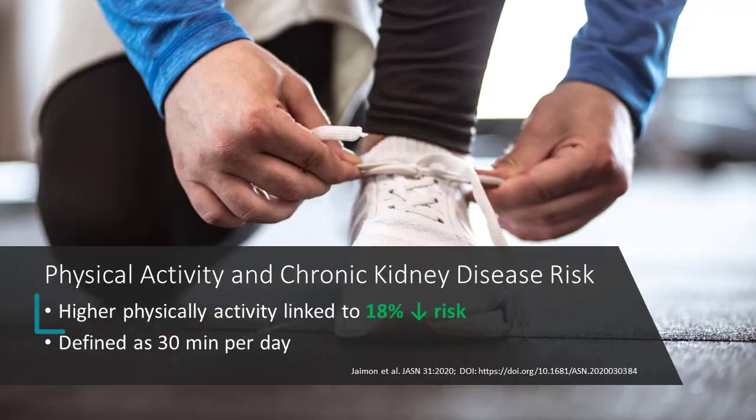What about physical activity? Well, those people who exercise more compared to those who hardly exercise, they had an 18% lower risk. And if you're wondering, what does that mean? How much exercise do I have to do? It was very simple. It was quantified as at least 30 minutes per day. Look, you got 24 hours in a day. 30 minutes is very doable. And even if you can't do it at once, you can split it up 10, 10, 10 or 15 minutes in the morning, 15 minutes in the evening.